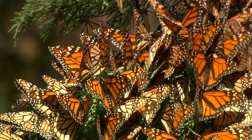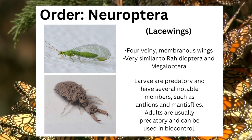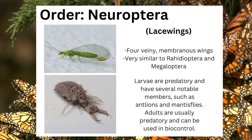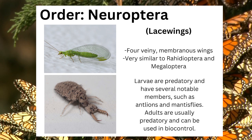Neuroptera, also called lacewings, can be identified by their four veiny membranous wings and their similarity to Raphidioptera and Megaloptera. Larvae are predatory and have several notable members such as antlions and mantisflies. Adults are usually predatory and can be used in biocontrol.